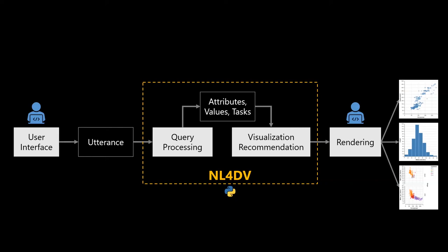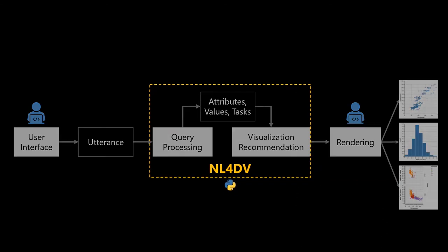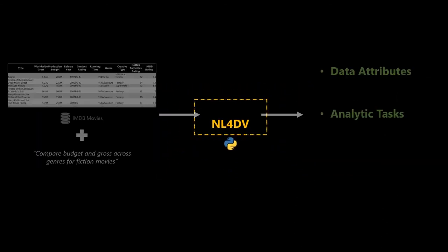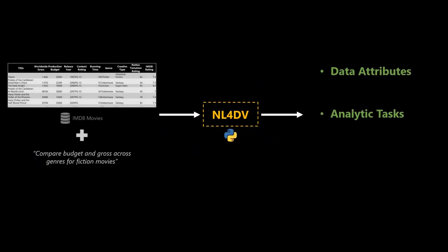We present NL4DV, a toolkit that helps prototype natural language interfaces for data visualizations. NL4DV provides a high-level Python API for interpreting natural language queries.